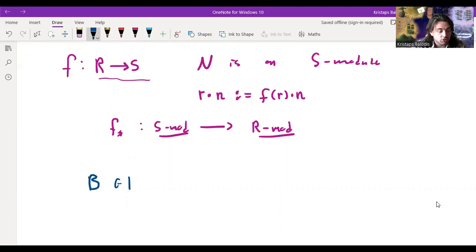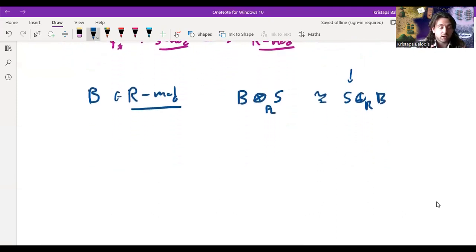So the functor defined in this way I'm going to call F lower star takes us from the category of S modules to the category of R modules. Okay. But what does this have to do with tensor product? How do we define the more general version of tensor product? Well, notice that if we have a ring homomorphism in the same way that I've just described here, that this actually makes N into an S module. Well, S itself is an S module, so that means whenever we have a ring homomorphism here, we can actually interpret S as an R module.